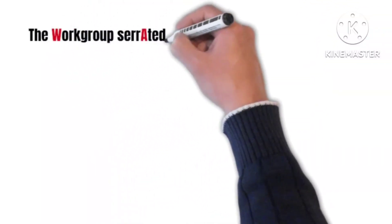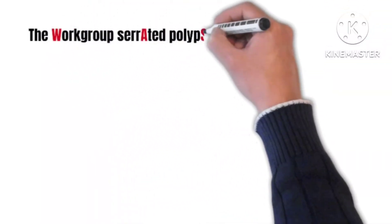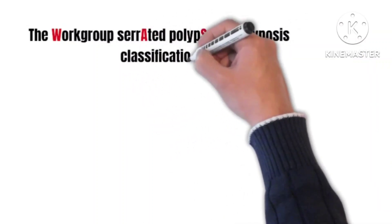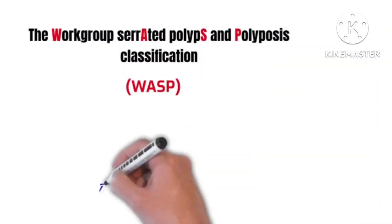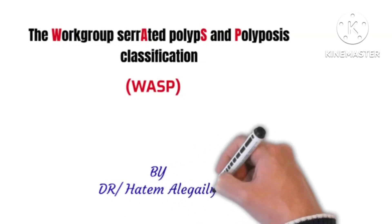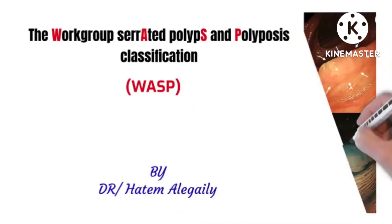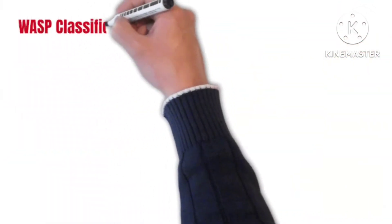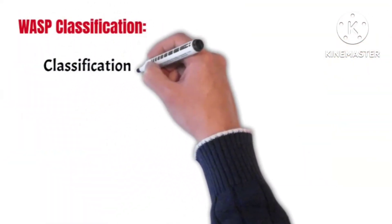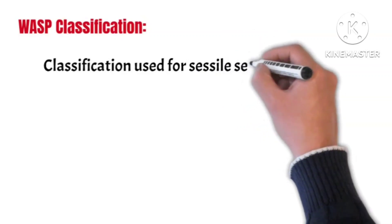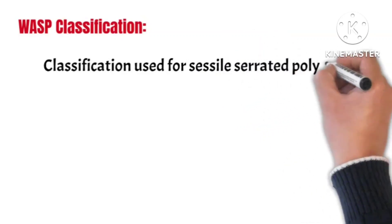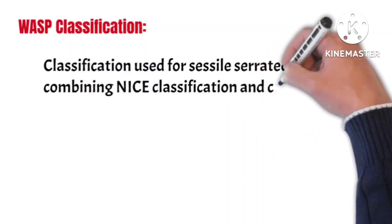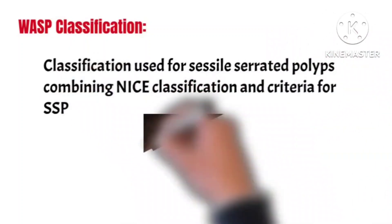In this video, we will discuss the workgroup serrated polyps and polyposis classification, WASP classification. WASP classification is a classification used for the serrated polyps, combining NICE classification and criteria for the serrated polyps.